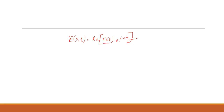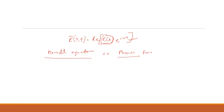Now we have to derive Maxwell's equations in phasor form — meaning only in the space-position dependent form. The first Maxwell equation is generally: ∇·D = ρ.